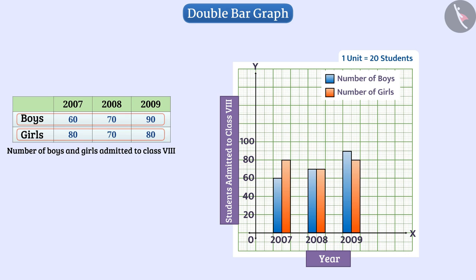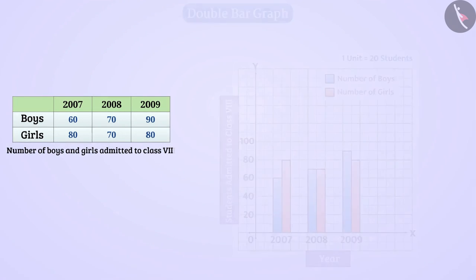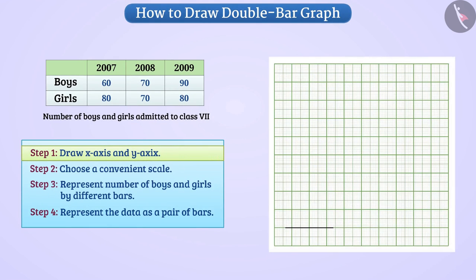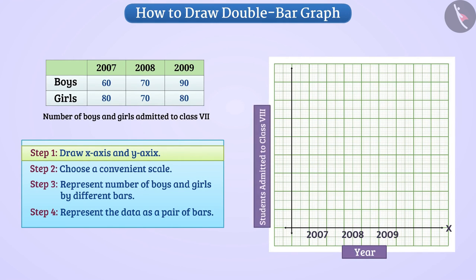Let us see how this double bar graph was drawn for the given data. Step 1: On paper, we will draw two mutually perpendicular lines — year on the x-axis and number of students in class 8 on the y-axis.